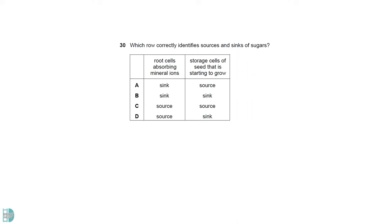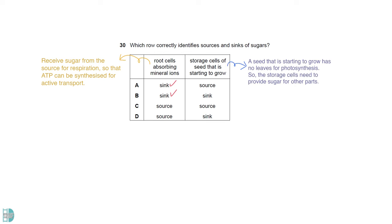Root cells absorbing mineral ions must receive sugar from the source for respiration, so that ATP can be synthesized for active transport. Hence it is a sink. A seed that is starting to grow has no leaves for photosynthesis. So the storage cells need to provide sugar for other parts. It is a source.